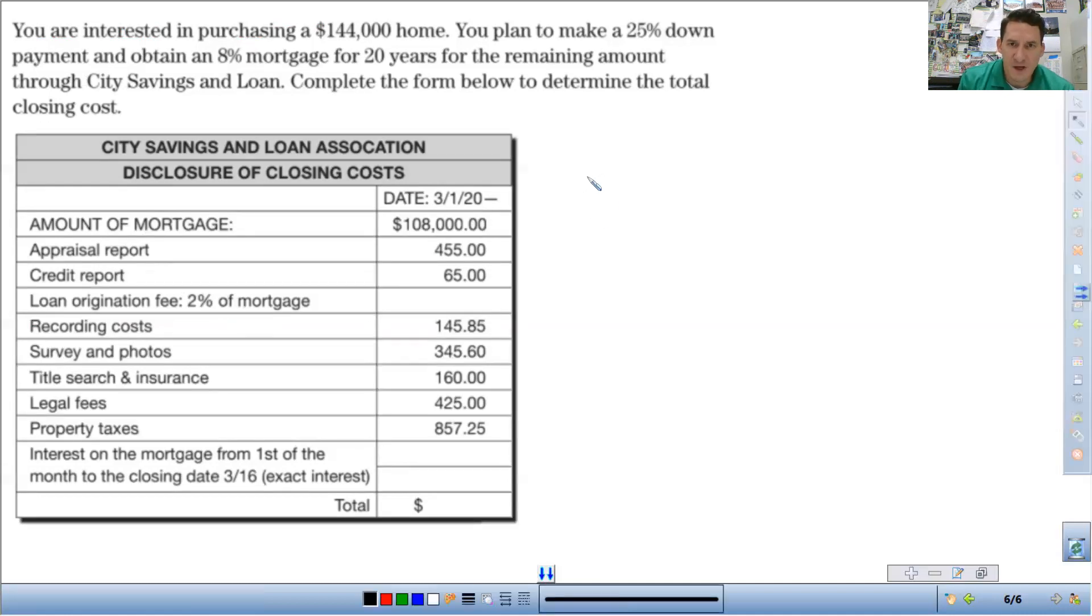So 2% of the fee, that's really easy. Make sure you change that percent to a decimal and then multiply it times the mortgage amount, $108,000. And I need a calculator for that. So 0.02 times $108,000 is equal to $2,160. This goes to the lender.